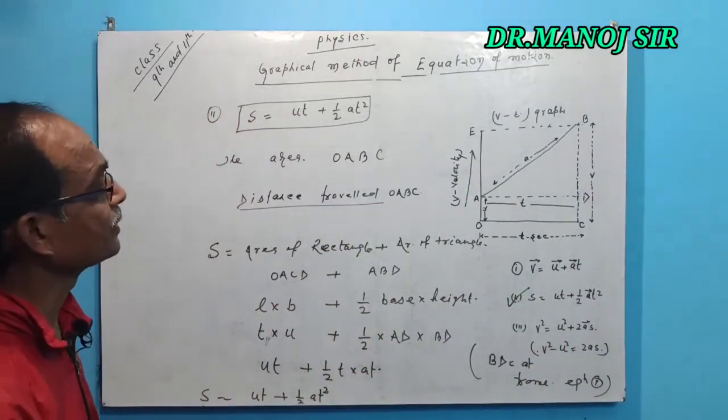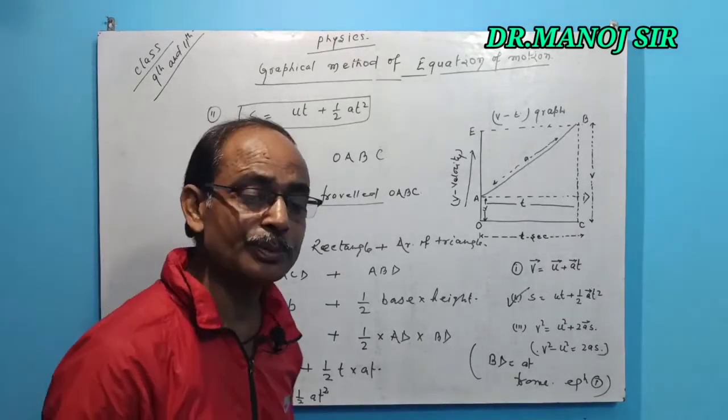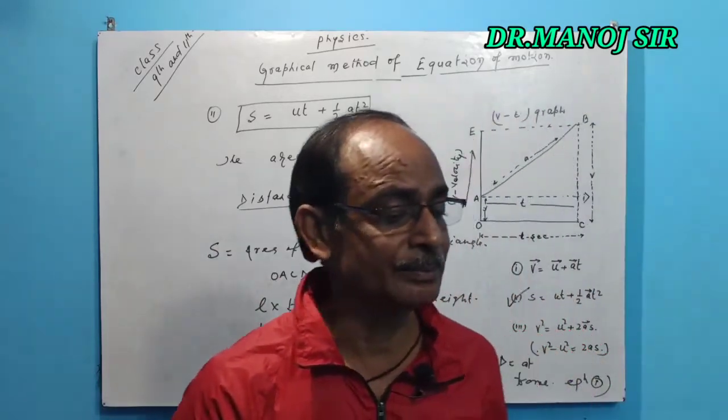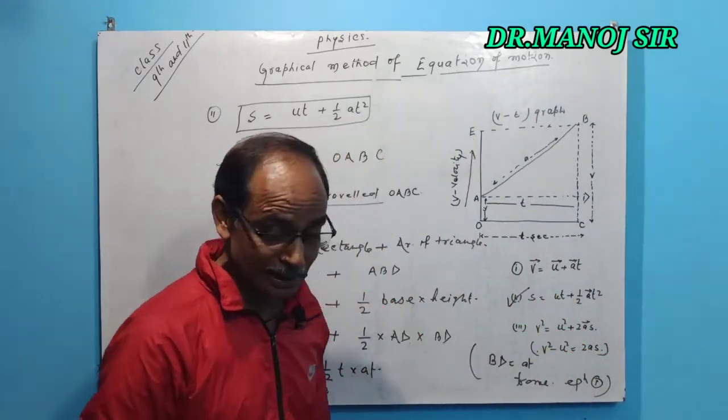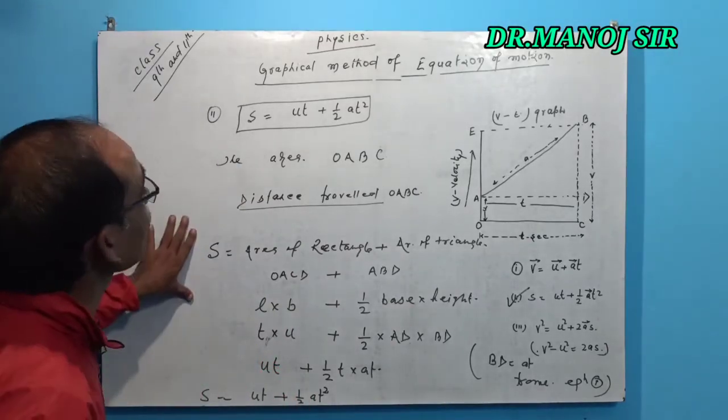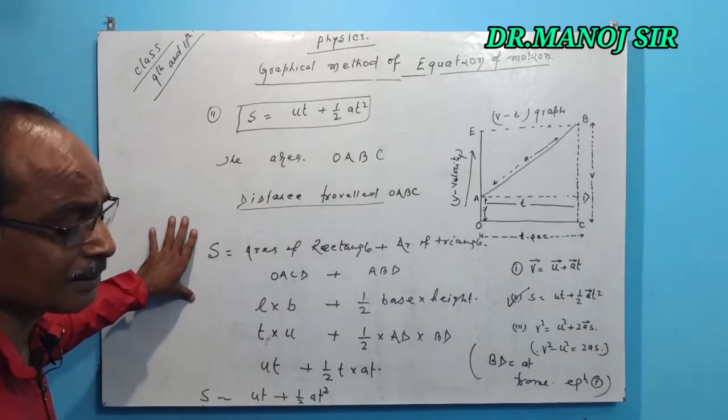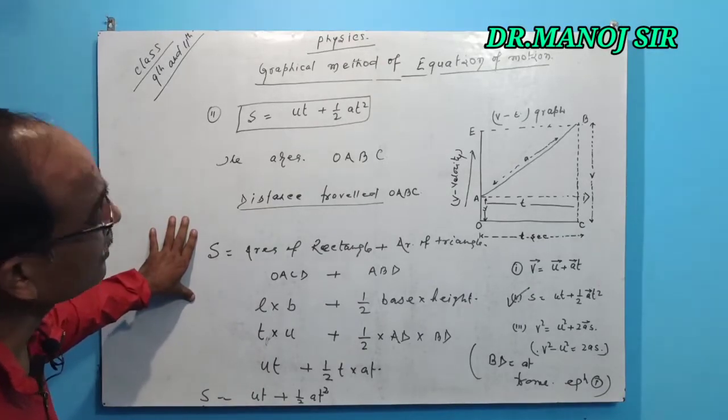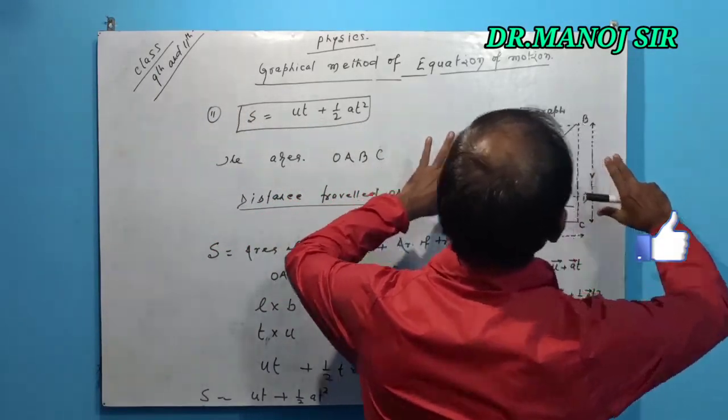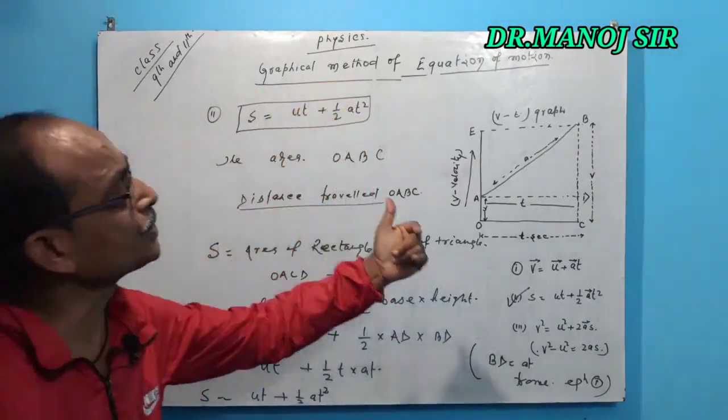That is the graphical representation of second equation of motion, s equals u t plus half a t squared, that is the distance formula of the equation of motion. Tomorrow I am again in front of you knowing about the third equation of motion and their graphical representation by this same given graph O A B C.